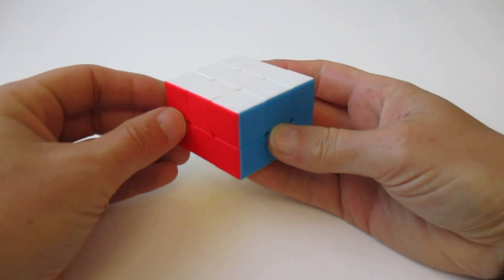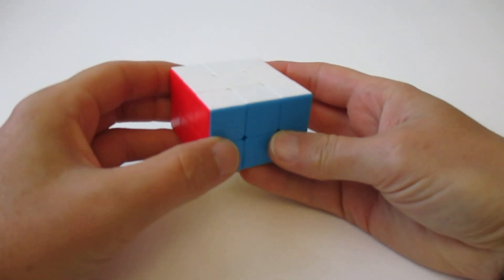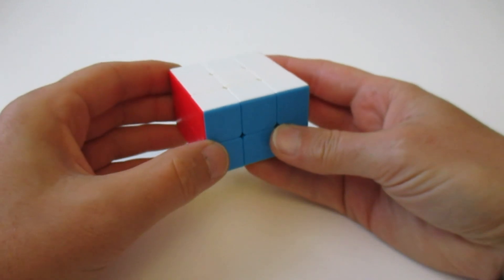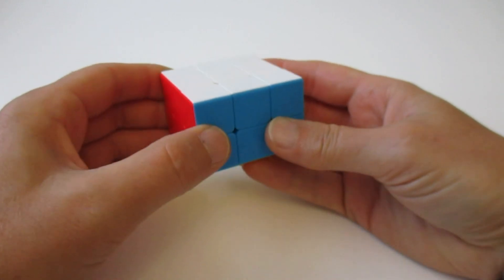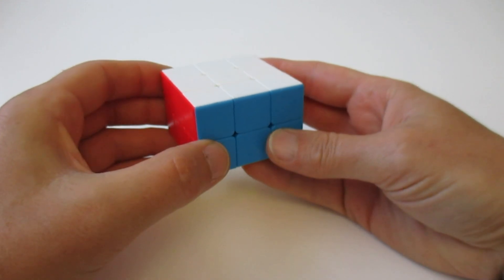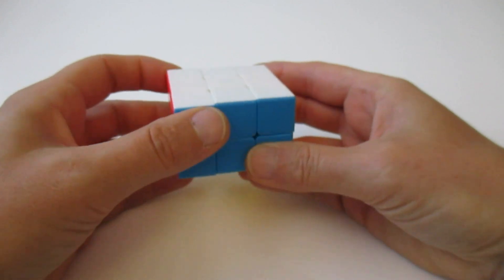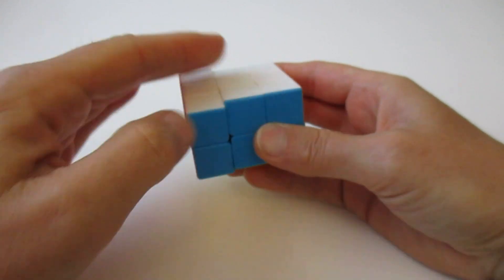Hi, today I want to show you how to solve the constraint 3x3x2 cube or cuboid, also known as domino cube. The constraint is that one layer can't be turned in this layer.